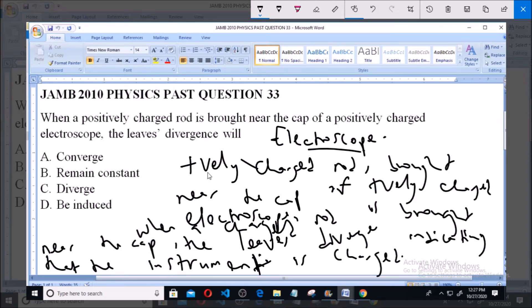So, what happens when a positively charged rod is brought near the positively charged electroscope is that there will be further divergence. So, it will diverge, because you have like charges, of course, repulsing.